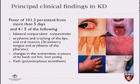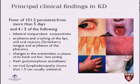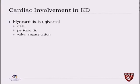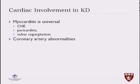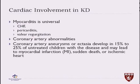Lymph nodes are usually an agglomeration of multiple lymph nodes that might feel as one. Regarding cardiac involvement, all of those patients have myocarditis — it is universal. They can present with no symptoms or symptoms of congestive heart failure, pericarditis, or valvar regurgitation. But most importantly, we worry about the coronary artery abnormalities. The ectasia or dilation of the coronary artery to form an aneurysm usually develops in 15% to 25% of untreated children with the disease and may lead to myocardial infarction, sudden death, or ischemic heart disease.